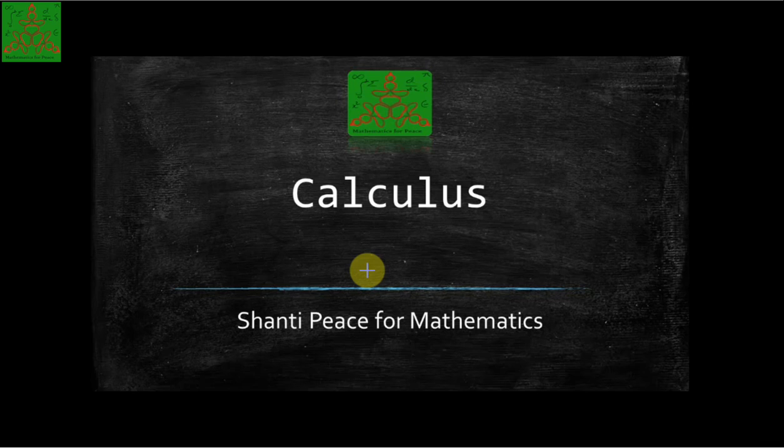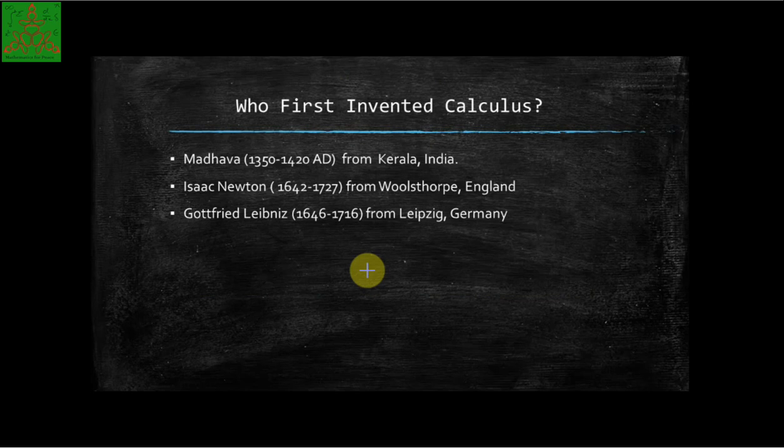Who has first invented the calculus? So in the history of mathematics when I read on the internet, it comes across three mathematicians who have worked on calculus. The first one is Madhava, he is from Kerala, India in the 13th to 14th century. The second one is Isaac Newton, he is an English mathematician in the 16th-17th century. And Leibniz is also from 16th to 17th century from Germany.